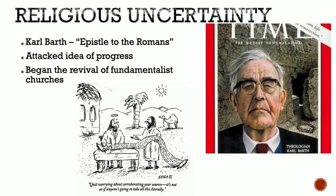This carries its way into religion and religious uncertainty. Karl Barth in his Epistle to the Romans attacks the idea of progress, essentially saying: look what happens when you stray from the Bible and dive into the world of science. This begins the revival of fundamentalist churches that try to go back to teaching the Bible strictly as written. Today there are places in the United States with museums showing dinosaurs next to people, reflecting a belief that the world cannot be older than what the Bible says — that's a fundamentalist view, and it begins after World War I.